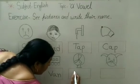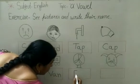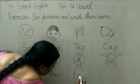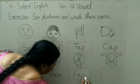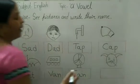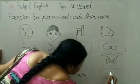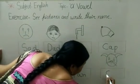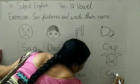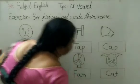Friend. F, A, F. Friend. And this picture is 'cat'. C, A, P. Cat.